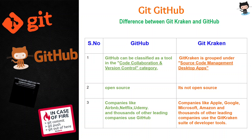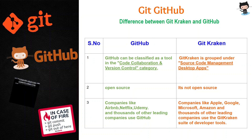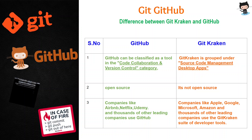GitHub is open source, but GitKraken is not open source — it's not free. GitHub is free; you can host your websites for free, whereas on GitKraken you cannot. There are a lot of companies which use GitHub, such as Netflix, Udemy, and many other leading companies. Whereas GitKraken is used in companies like Apple, Google, Microsoft, and Amazon — these are some of the leading companies which use GitKraken developer tools.